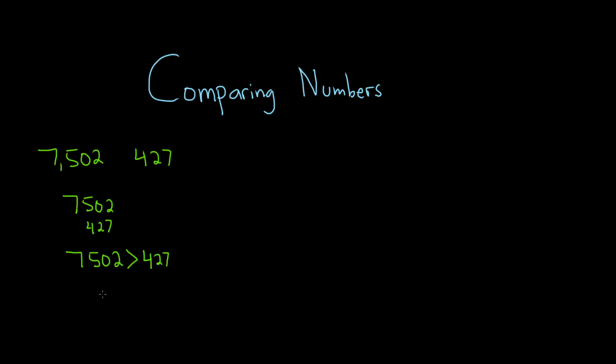You can also write this backwards. You can write this as 427 and then reverse the symbol. This symbol is called less than. And so 427 is less than 7,502.